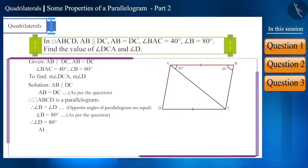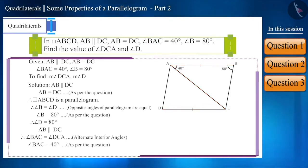And since side AB is parallel to side DC and AC is the diagonal, therefore, angle BAC will be equal to angle DCA as these are alternate interior angles. Therefore, angle DCA will also be 40 degrees.